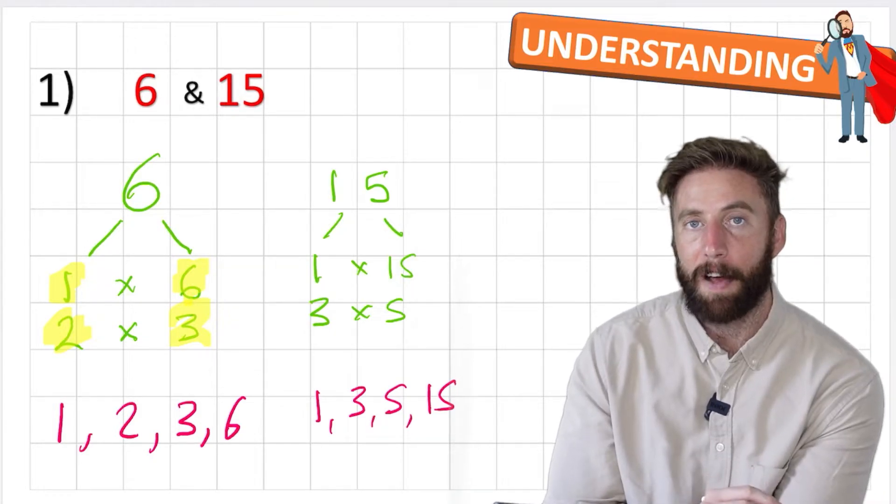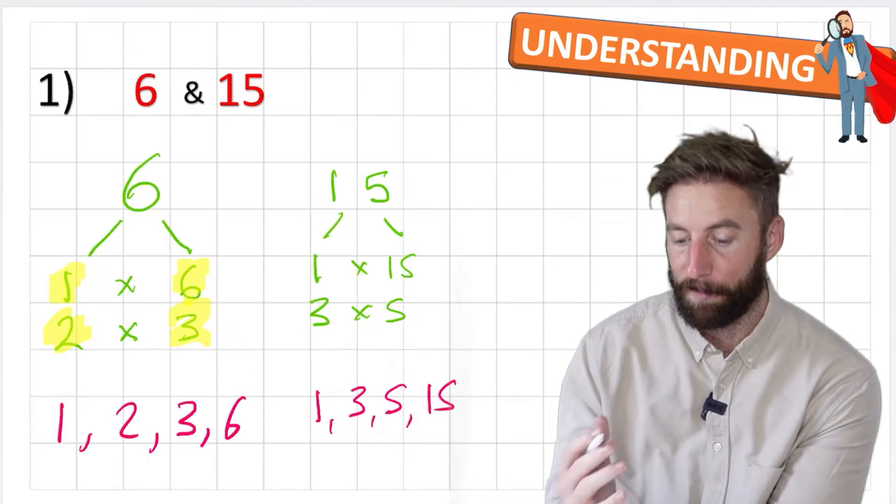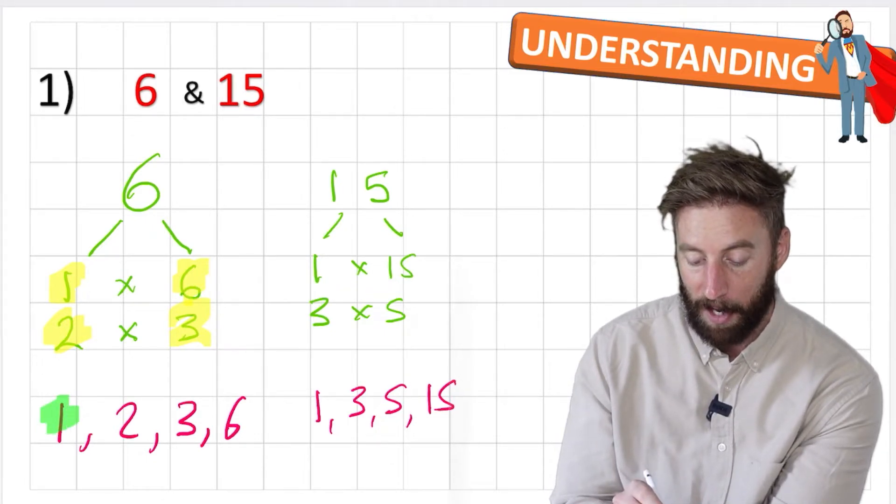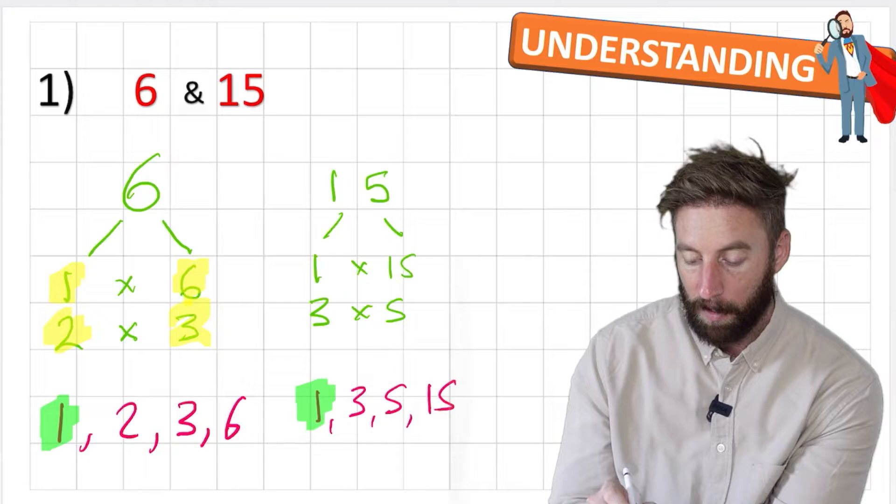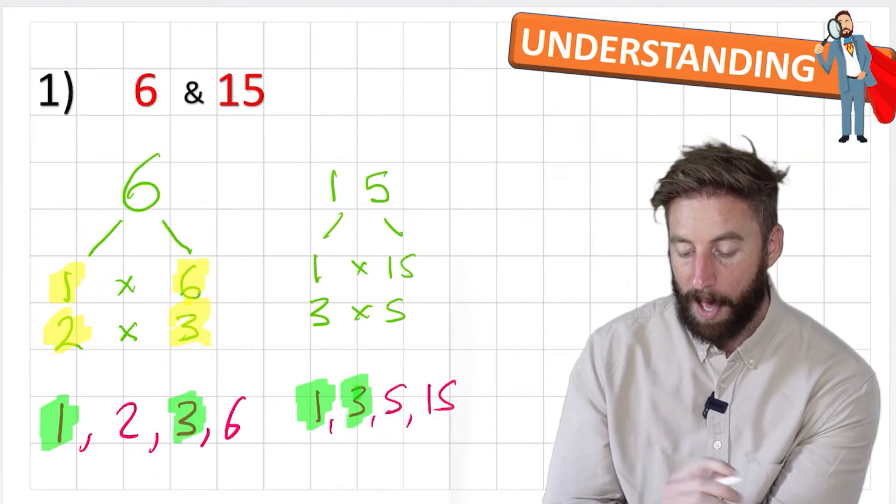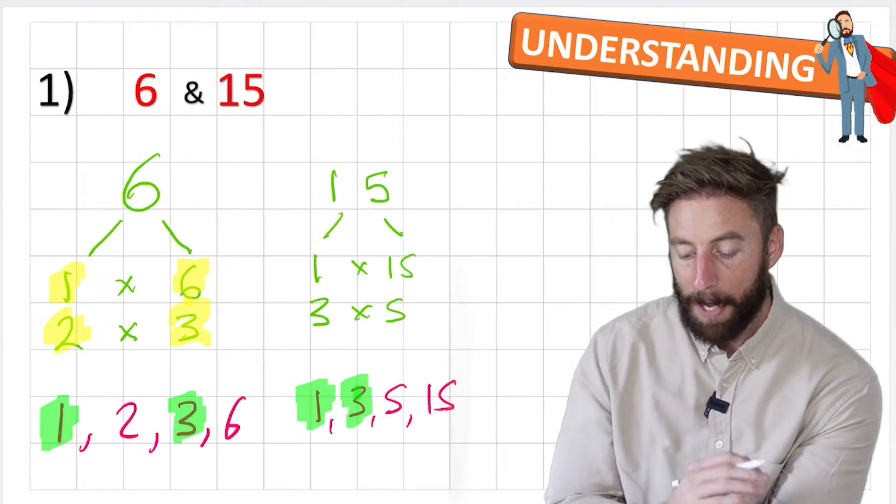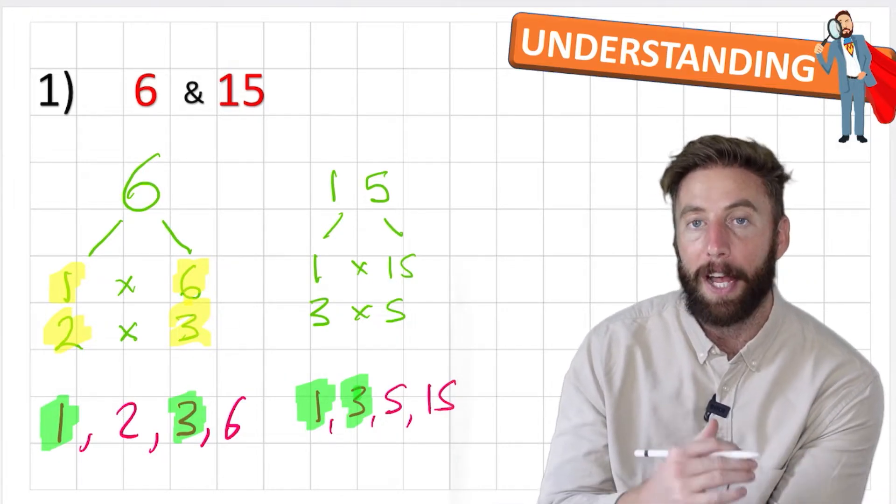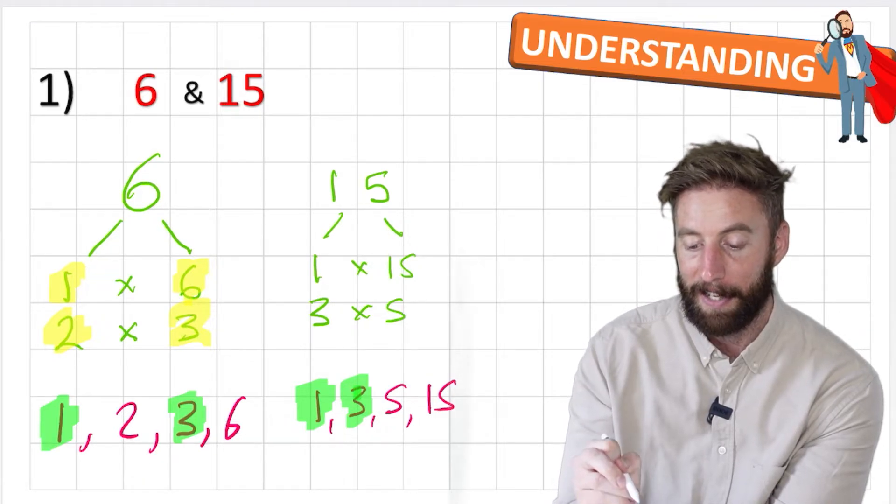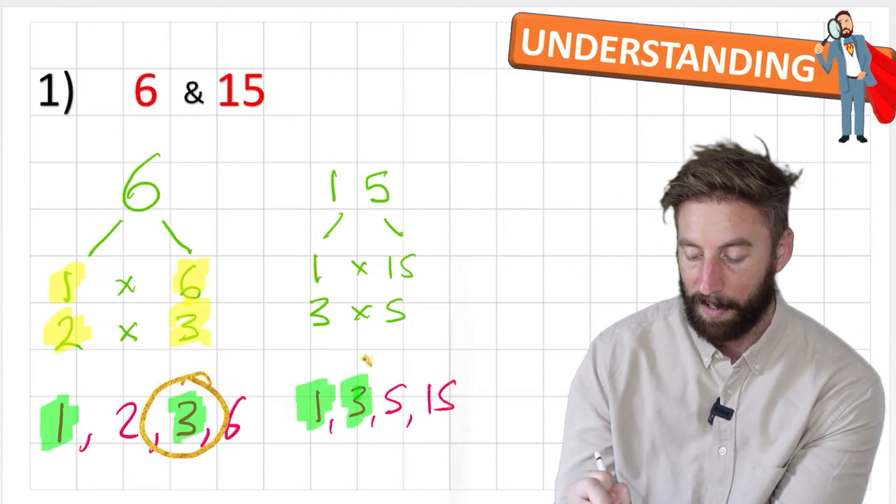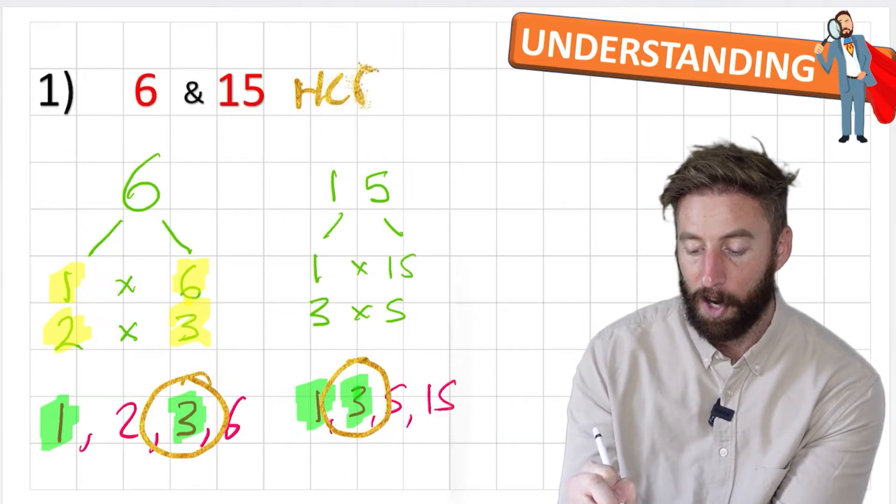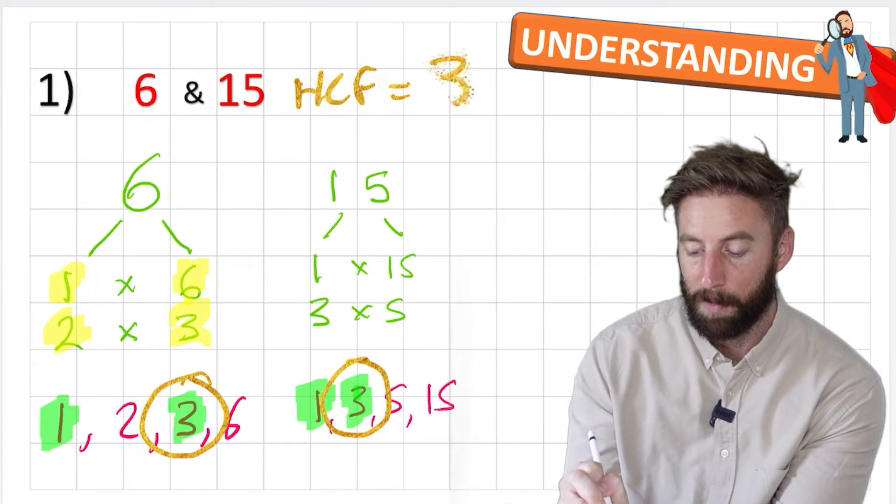Okay so now that I've found my factors now I need to look at my next word, the common factors, and let's see which of those are the same. Well in both of these I have a one. In both of these I have a three. And that's it. Okay so I've found my common factors. And lastly I'm looking for my highest common factor. So my highest common factor in this case is three. So the highest common factor equals three.